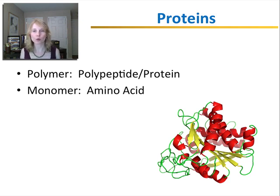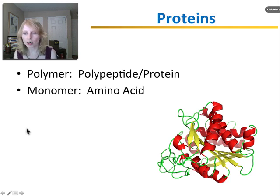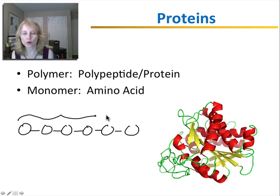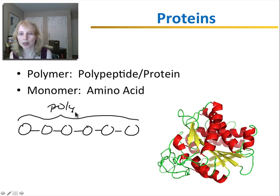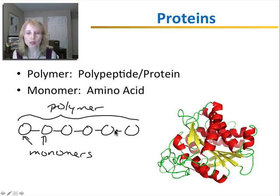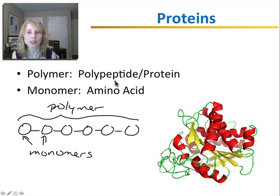Proteins are molecules that are called polymers. A polymer is any molecule that is made up of individual building blocks that are linked together in repeating units. Those individual building blocks are called monomers. The monomers that make up proteins are called amino acids. Each of these individual circles represents an amino acid, and when they are linked together into a polymer, that is called either a polypeptide or a protein.